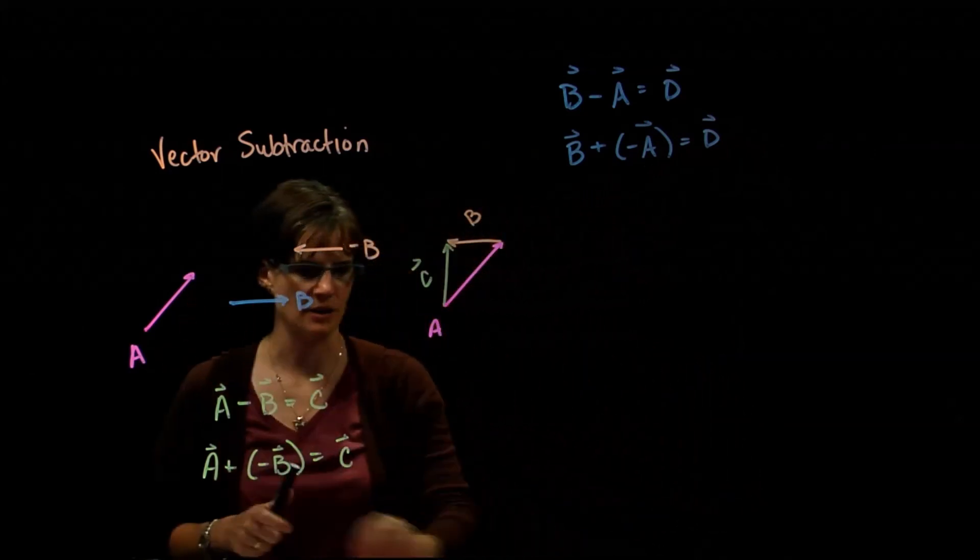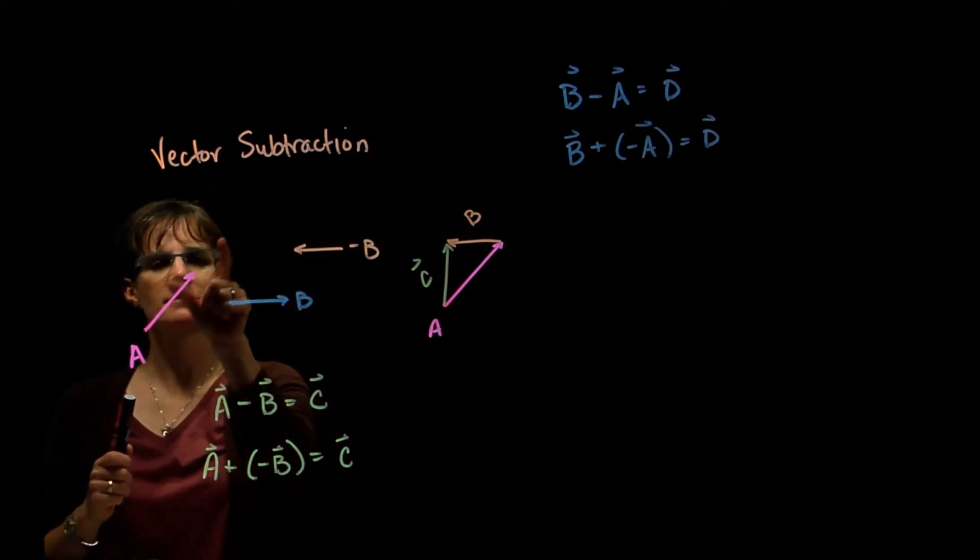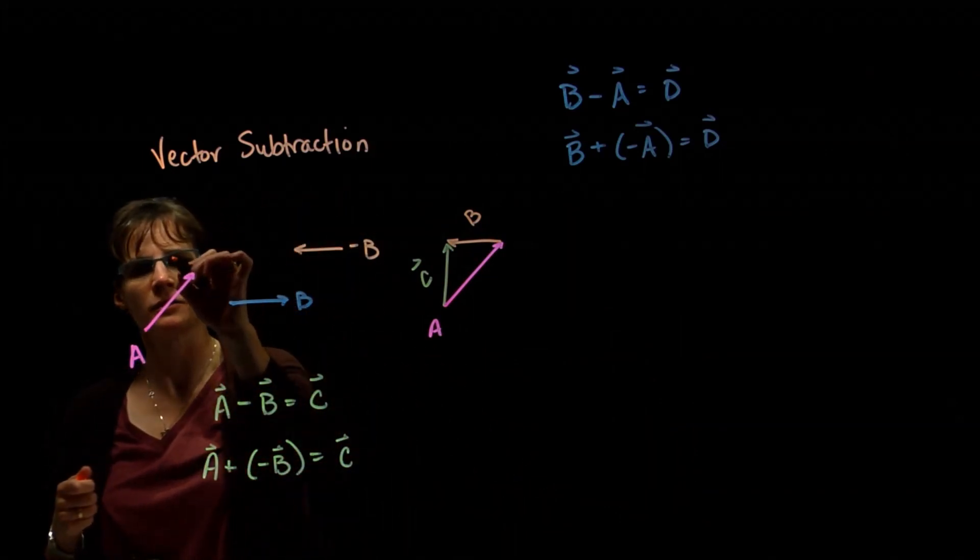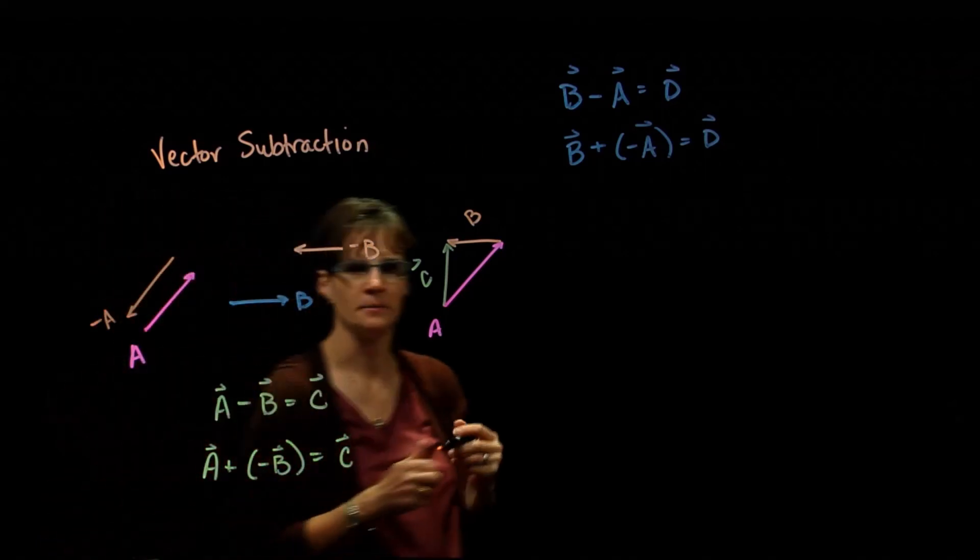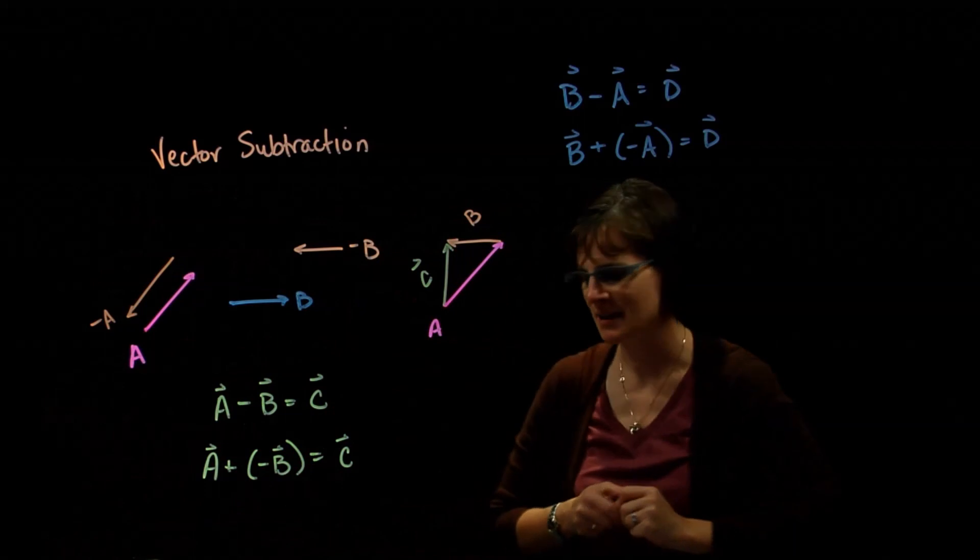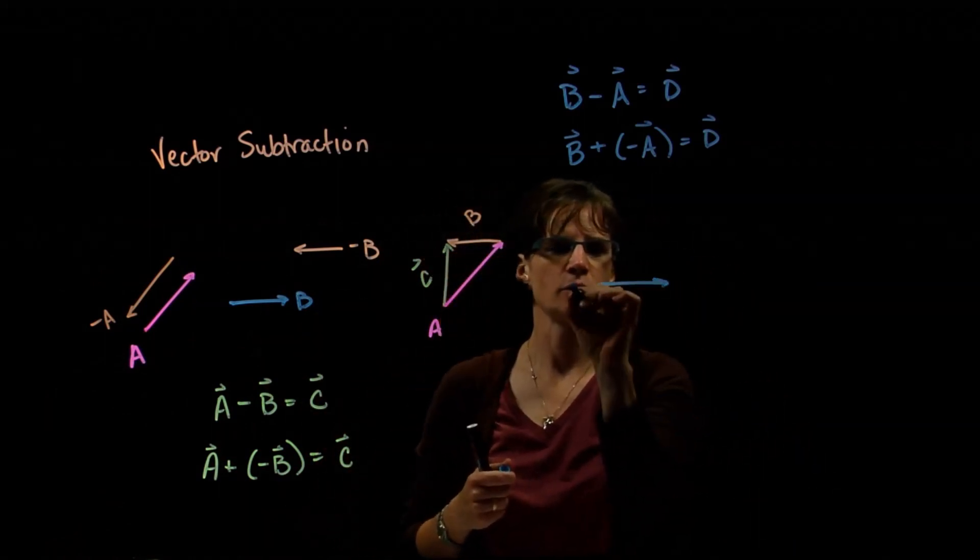So what will negative A look like? Well, negative A is going to be the same length, opposite direction. So here is my negative vector A. So how do I subtract A from B? Well, let's start off with our vector B. So there was vector B.